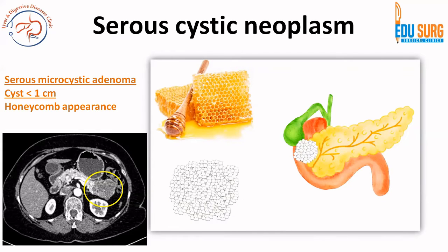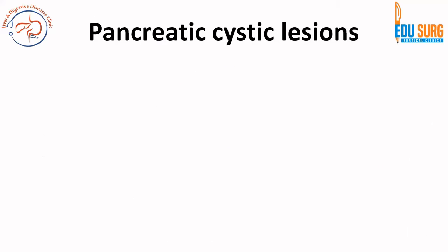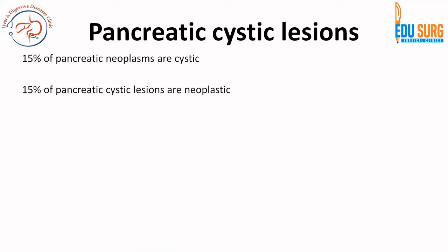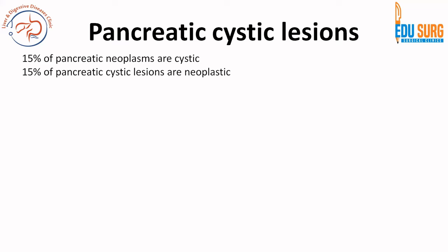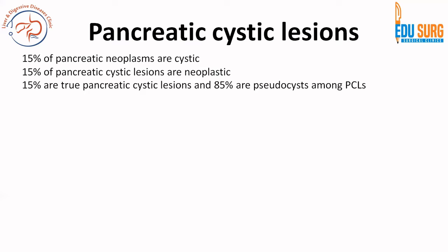Serous cystic neoplasm is a microcystic adenoma, that is a cyst which is less than one centimeter, and multiple cysts of that type, and it has a honeycomb appearance which is a commonly asked question. When we talk of pancreatic cystic lesions in general, 15% of pancreatic neoplasms are cystic whereas 15% of pancreatic cystic lesions are neoplastic. 15% are true pancreatic cystic lesions and 85% are pseudocysts. Out of true cysts, 15% are neoplastic and 15% of all tumors of pancreas are cystic. Read this three or four times — a lot of questions are asked from these three lines.